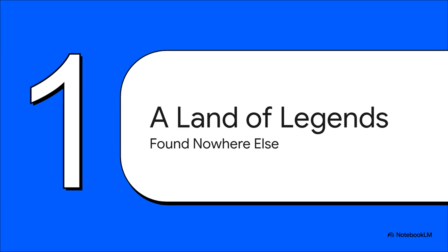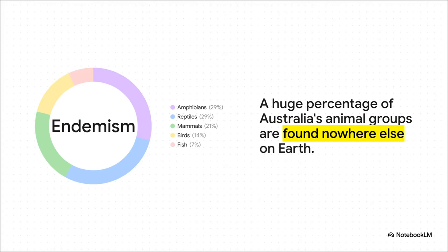To move past the myths and into the science, we need to talk about a key concept called endemism. It's a fancy word, but all it really means is that a huge portion of Australia's animals are native only to this one continent. You won't find them anywhere else on Earth. And just look at how unique it is. It's staggering. A whopping 94% of its amphibians and 93% of its reptiles live only in Australia. Almost 70% of its mammals are totally unique to the continent, too. This is no coincidence. It's the result of an incredible journey through time.